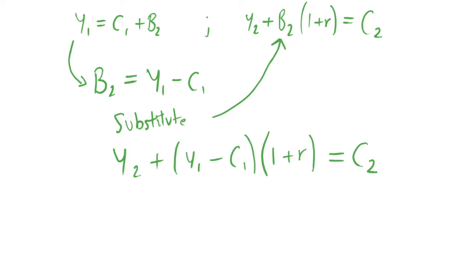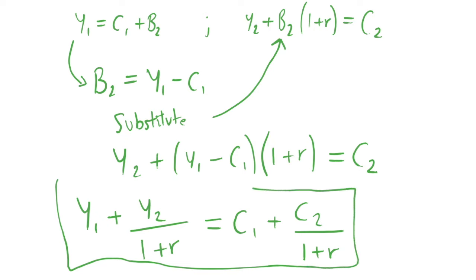And now we're going to rearrange this, not in an obvious way, but we can divide through by 1 plus R and then move a couple of terms around from each side such that we can rearrange into this form where we have Y1 plus Y2 over 1 plus R equals C1 plus C2 over 1 plus R. And if I can draw a terrible box around this like so, this is our intertemporal budget constraint or IBC because I'm not going to write out intertemporal budget constraint.